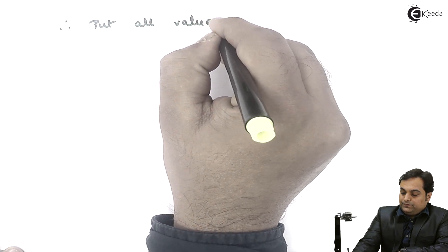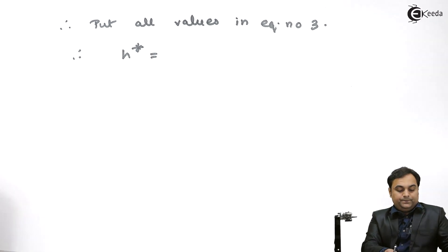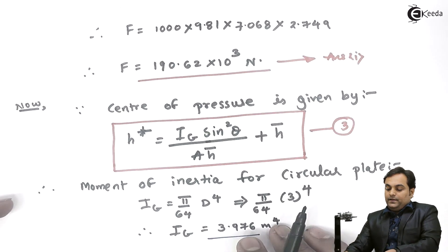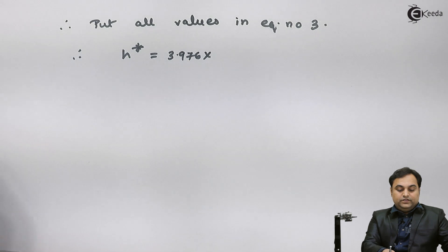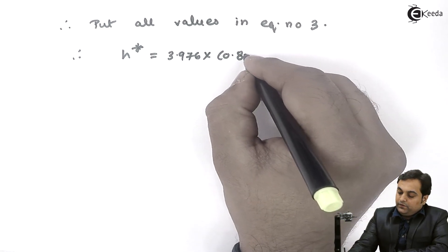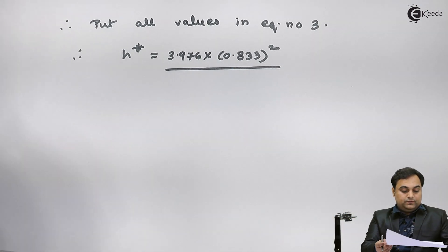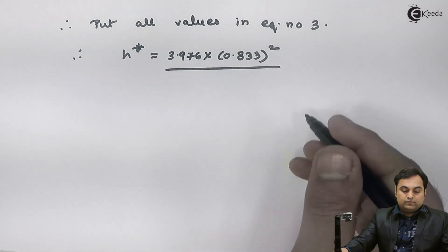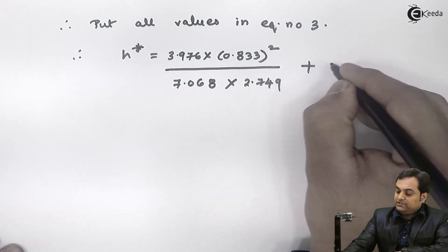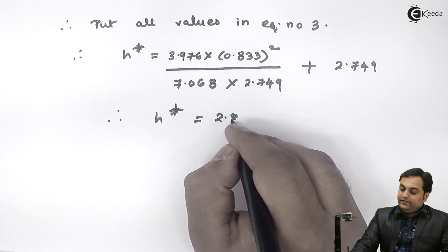Putting all values into equation number 3: H* = (3.976 × 0.833²) / (7.068 × 2.749) + 2.749. Calculating this gives H* = 2.89 meter. This is the second answer — the position of the center of pressure.